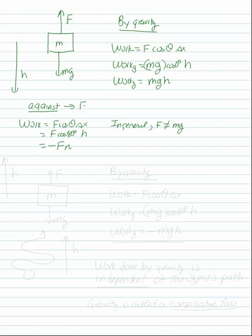So now we are going to look at by gravity and lifting, and we can guess what we are going to get. Here is our object, M, F, mg. Lift it through a height h. So, by gravity, work equals F cos theta delta x. The work done by the force of gravity, mg.